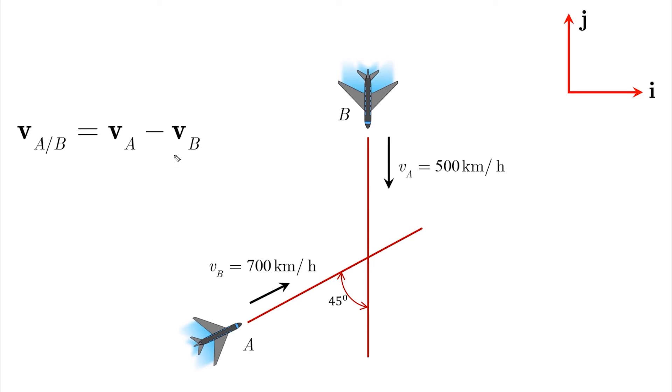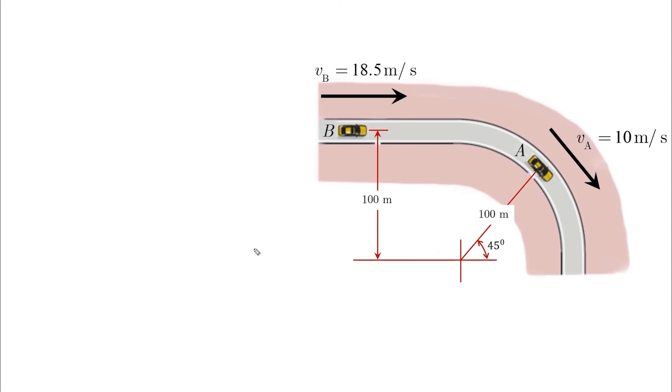And the same thing also if we have the acceleration of A and B also in straight lines. And here is another example where vA and vB are both given as magnitude and directions.